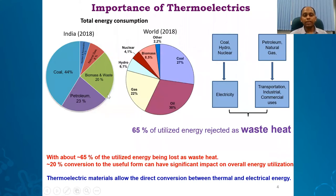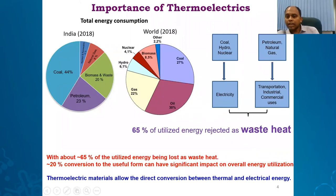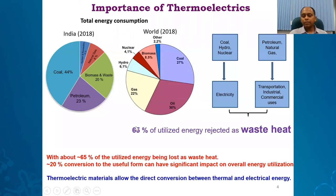Total energy consumption in India in 2018 generally comes from coal, petroleum, and natural gas. Burning coal generates electricity, and combustion of petroleum and natural gas basically runs all transportation and industrial sectors. But after use of this enormous amount of energy in electricity and transportation and industrial sectors, 65% of the energy is rejected as heat.